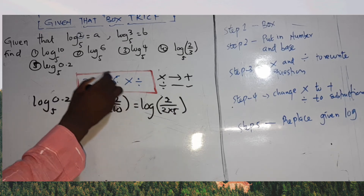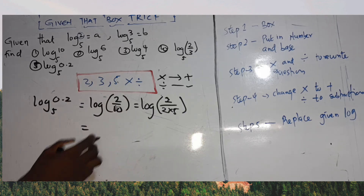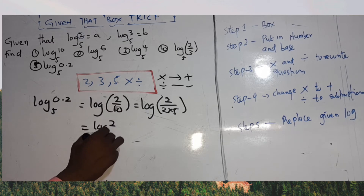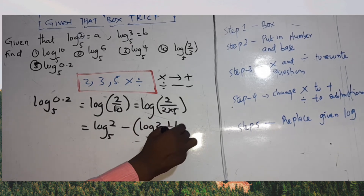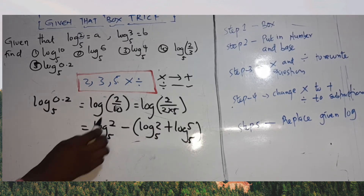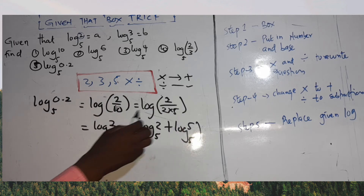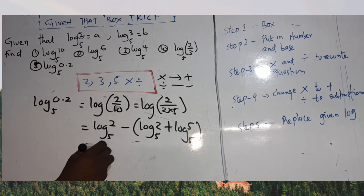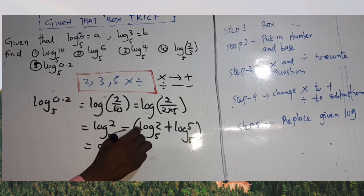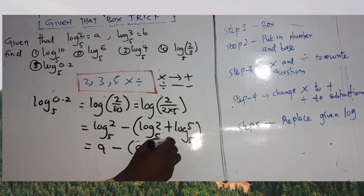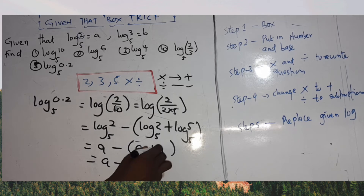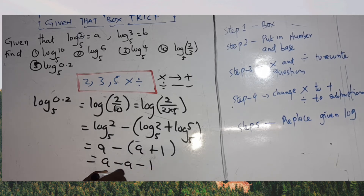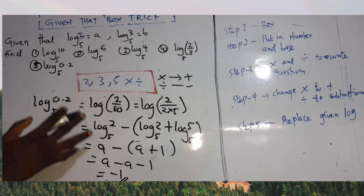After rewriting, I change the signs. The division becomes minus, and the multiplication in the denominator becomes plus, so: log base 5 of 2 minus (log base 5 of 2 plus log base 5 of 5). Step 5: log base 5 of 2 is a, log base 5 of 5 equals 1, so we get a − (a + 1) = a − a − 1 = −1. Final answer: −1.